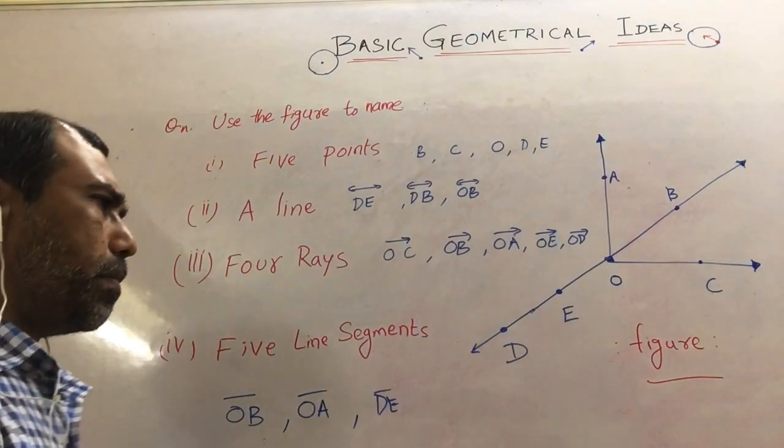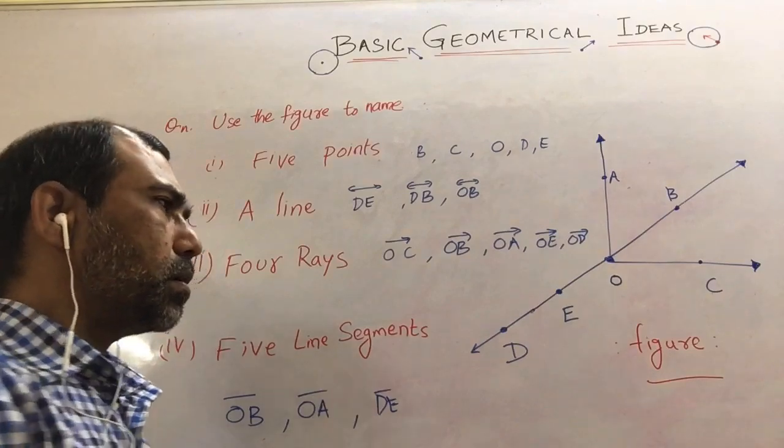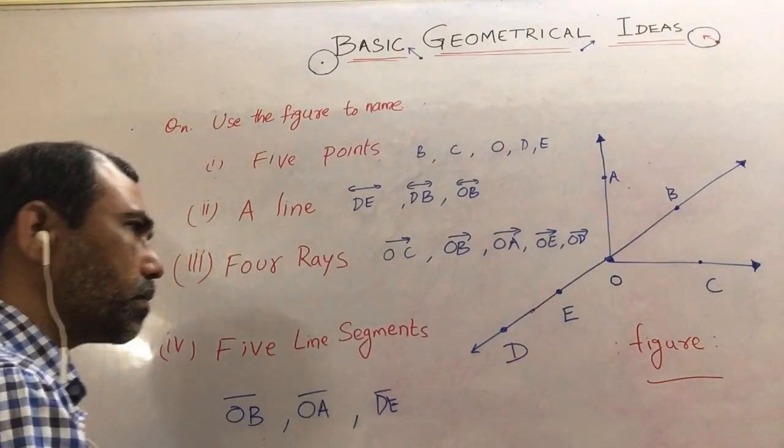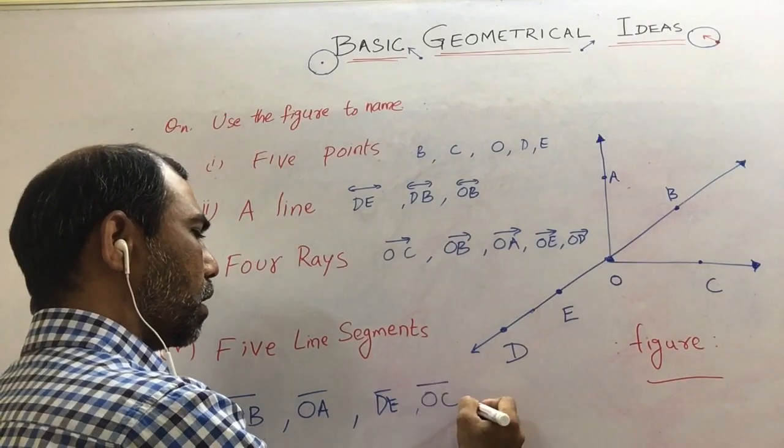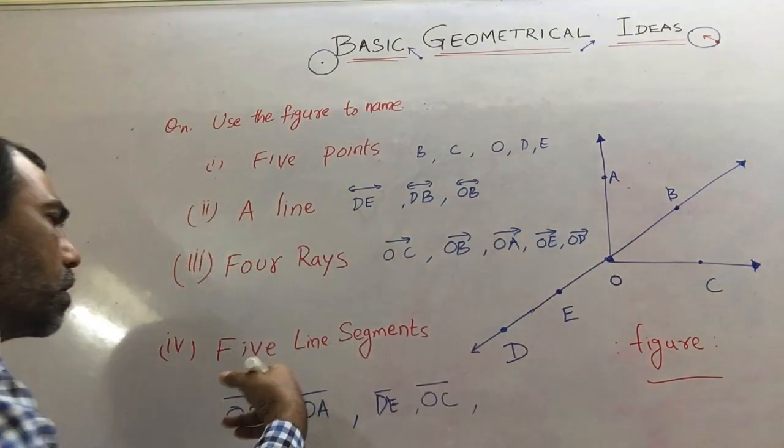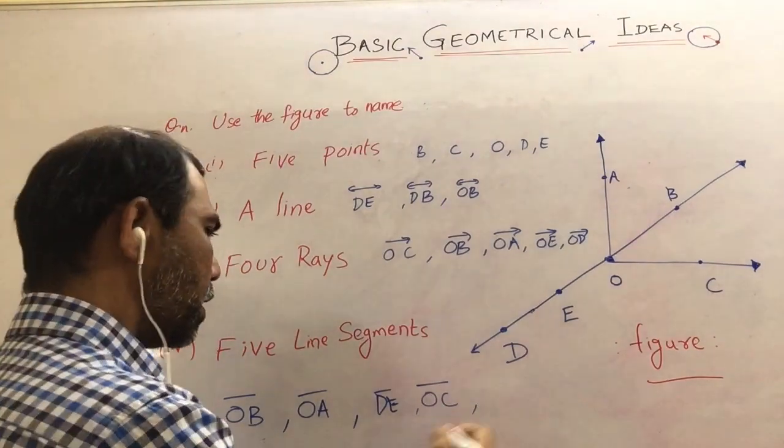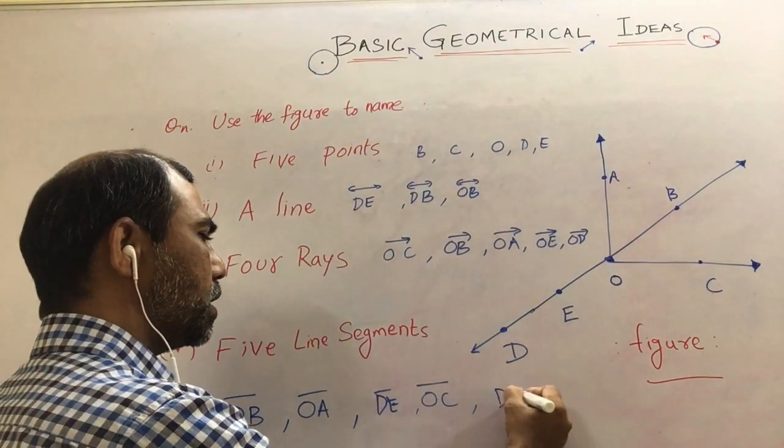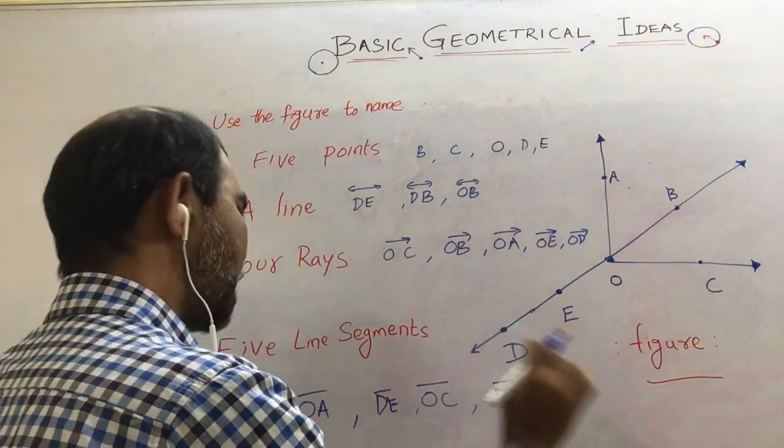When you are representing, you must write the line on the top of the points. And even OC also can be the answer for the line segment. And even DB also you can write as a line segment. And it has a fixed length.